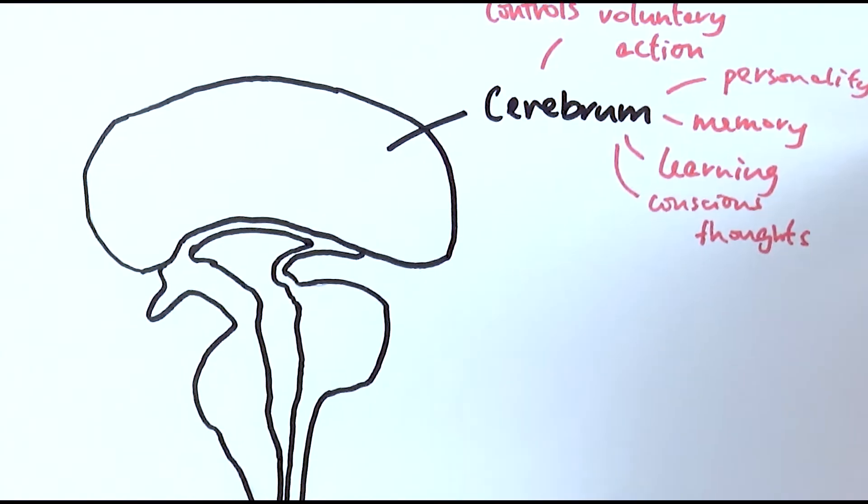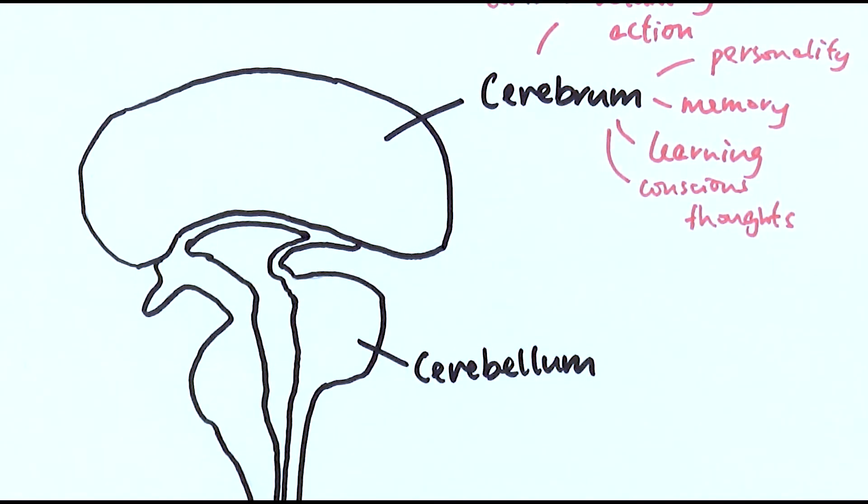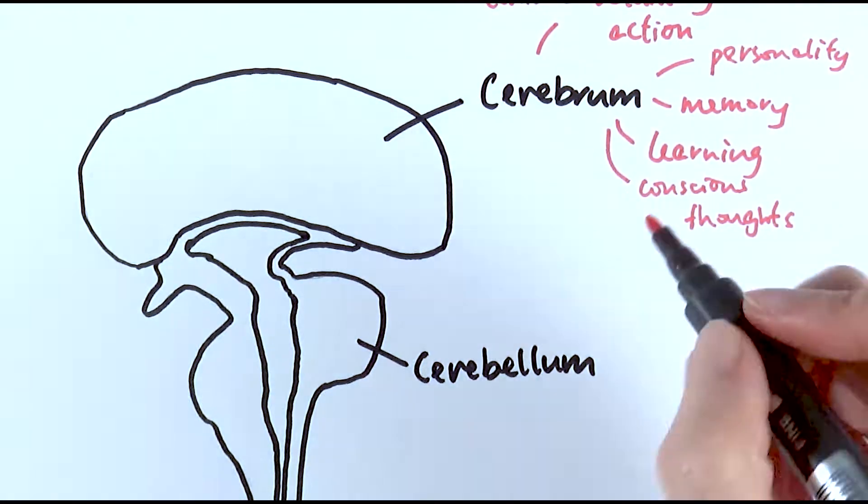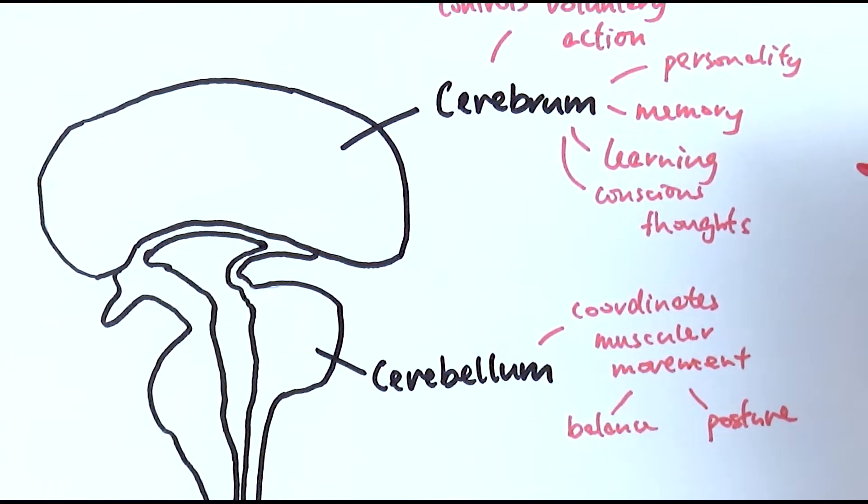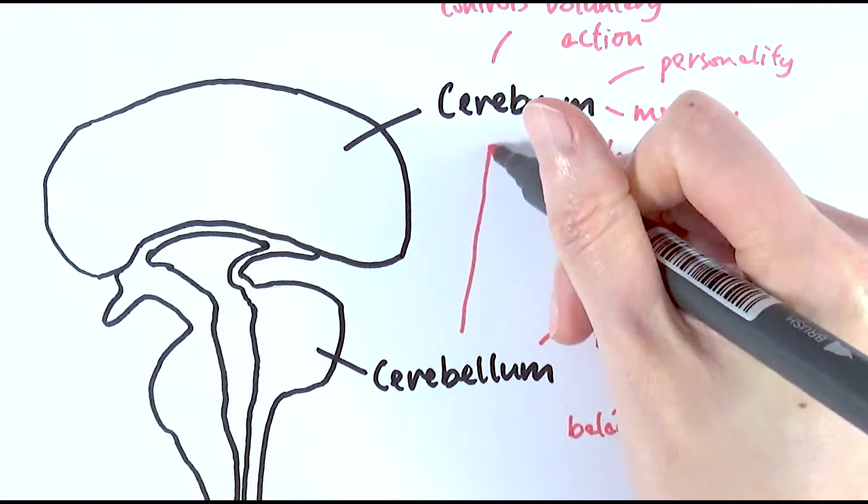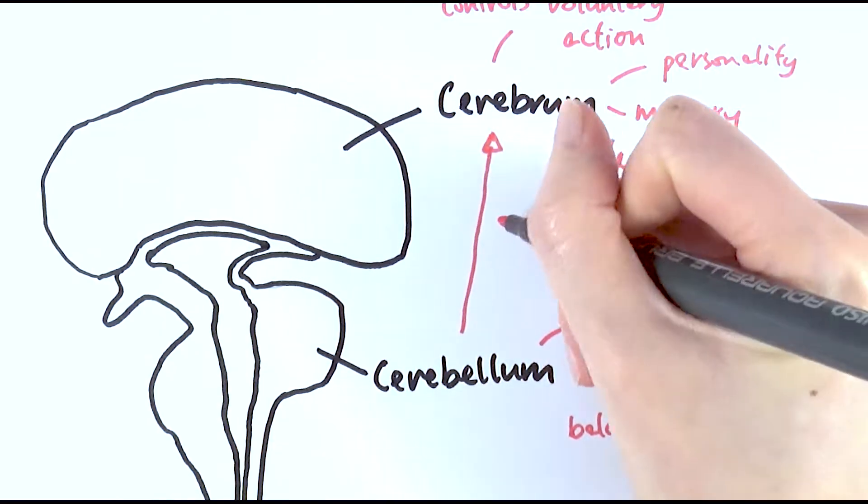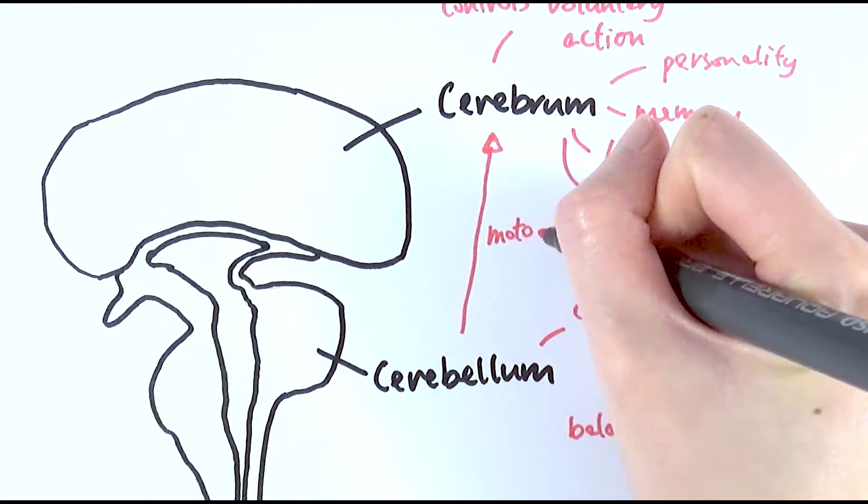Another one that we'll look at is the cerebellum. The cerebellum is more about the muscular control of our movement. So the posture and balance. Now we say that the cerebellum obviously works very closely with the cerebrum to have a full or better control of our motions.